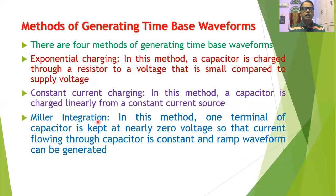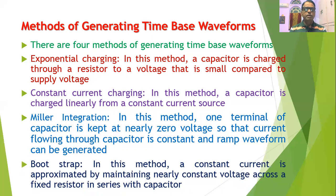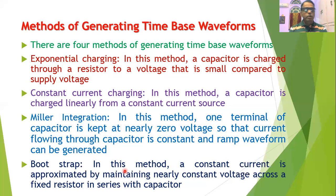Another popular method is called Miller integration, where the capacitor is used along with a high-gain amplifier. One terminal of the capacitor is kept at nearly zero voltage so that the current flowing through the capacitor is constant and a ramp waveform can be generated. Another method is called the bootstrap method, where the capacitor is charged by constant current. The voltage across the series resistance is maintained constant so that the current flowing through the capacitor is constant, and therefore a linear sweep voltage can be generated.